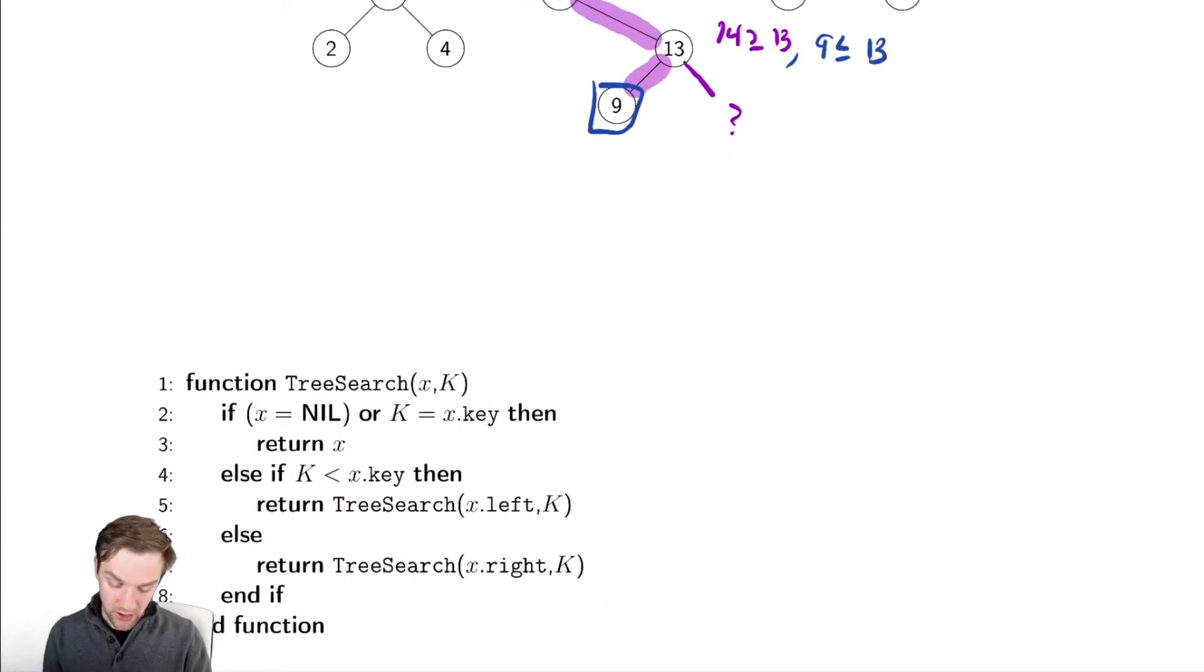Here's our tree search. We have a base case of if we happen to find no child, we'll call that nil, or if the thing I'm searching for is equal to the key, then I return either of those. So returning nil would represent that I couldn't find it.